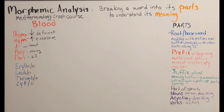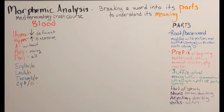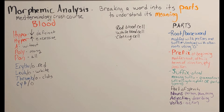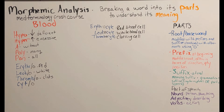Here are the most important base words you will see in the blood chapter. Erythro means red, leuco means white, thrombo is related to clots, and cyte is related to cells. Using your powers of logic, a red blood cell is an erythrocyte, a white blood cell is a leukocyte, and a clotting cell is a thrombocyte.